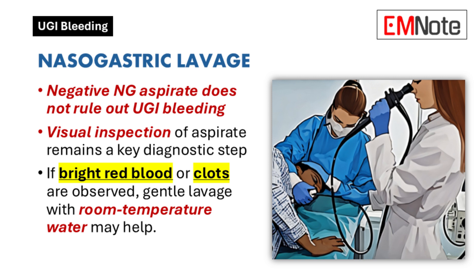While a negative nasogastric aspirate does not rule out upper gastrointestinal bleeding, visual inspection of the aspirate remains a key diagnostic step. If bright red blood or clots are observed, gentle lavage with room temperature water may help.